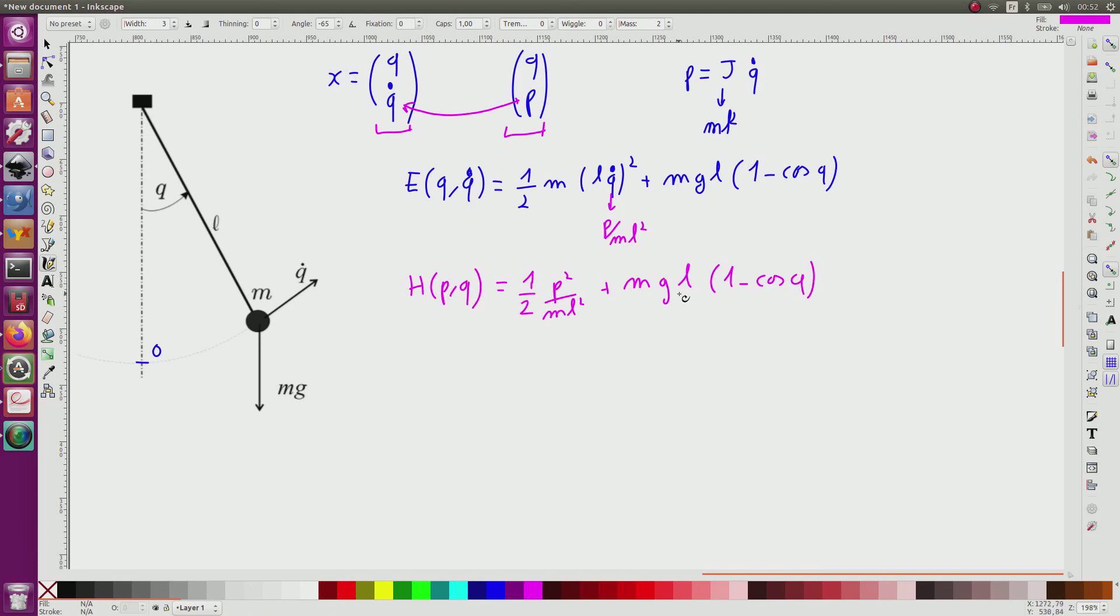From this expression of this function, I will be able to derive the state equation. So they are given by q dot equal the partial derivative of h with respect to p at point (p, q), which is equal here, since this term does not depend on p, so I derive only this one and I obtain p divided by ml².